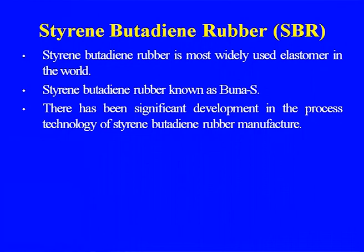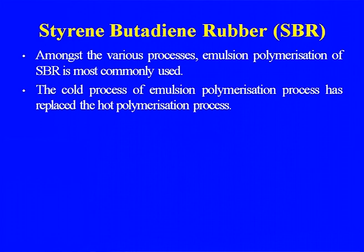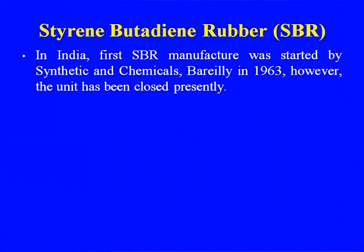Styrene butadiene rubber (SBR), also known as Buna-S, is one of the most widely used elastomers in the world due to its flexibility in raw material sourcing - either from the molasses route or the petrochemical route. There has been significant development in the process technology of SBR manufacture. Emulsion polymerization of styrene butadiene rubber is the most commonly used method. The cold process of emulsion polymerization has been replaced with the hot polymerization process. In India, the first SBR manufacture was started by Synthetic Chemicals in 1963.